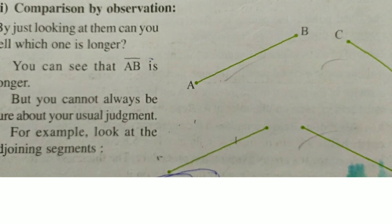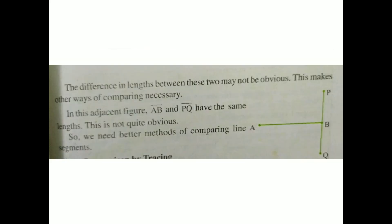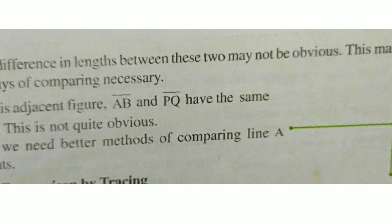Now, next one. You can see here two line segments AB and PQ are perpendicular to each other — that is, they are drawn in a perpendicular manner. One line is horizontal and the other one is vertical. The two line segments have the same length, but it will be a problem to compare these two lines. So we should have a better method of comparing line segments. You can't say which one is greater — AB or PQ.